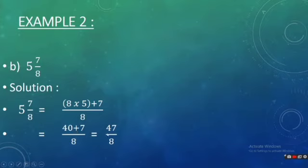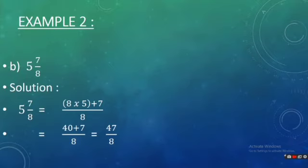If we want to do this question directly: 8 fives are 40, 40 plus 7 becomes 47, so our answer is 47 by 8. In this question, first multiply the denominator by the whole number and then add the numerator, and you will get your answer.